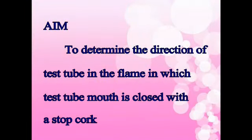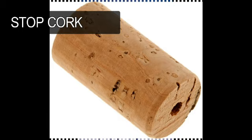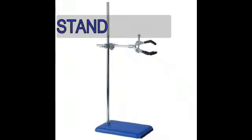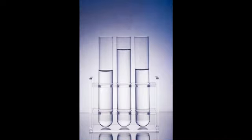Vapor pressure inside the test tube. Aim: To determine the direction of test tube in the flame when the test tube mouth is closed with a stop cork. Materials required: test tube, stop cork, stand, flame. Procedure: Take a test tube of good quality glass material.